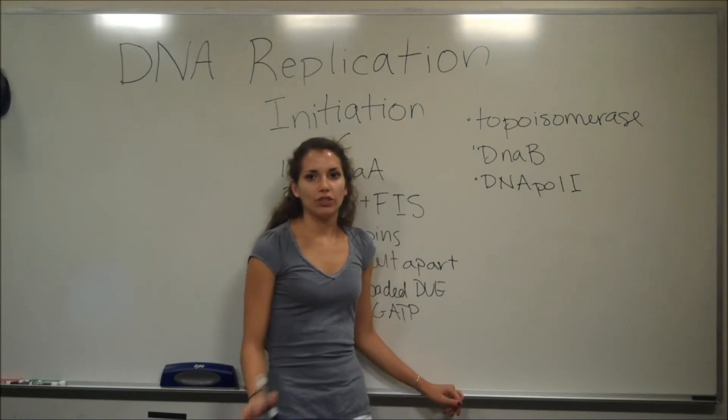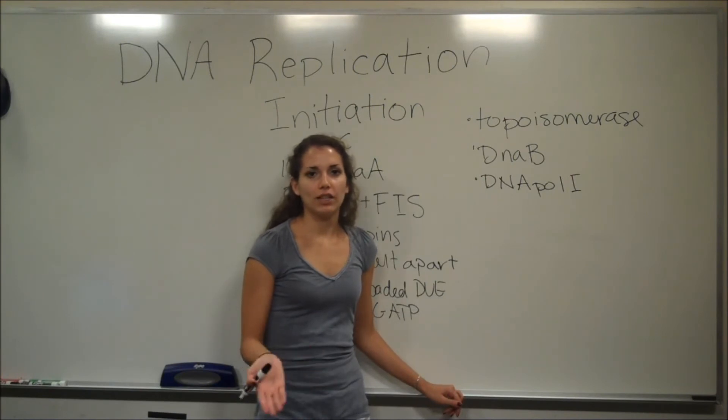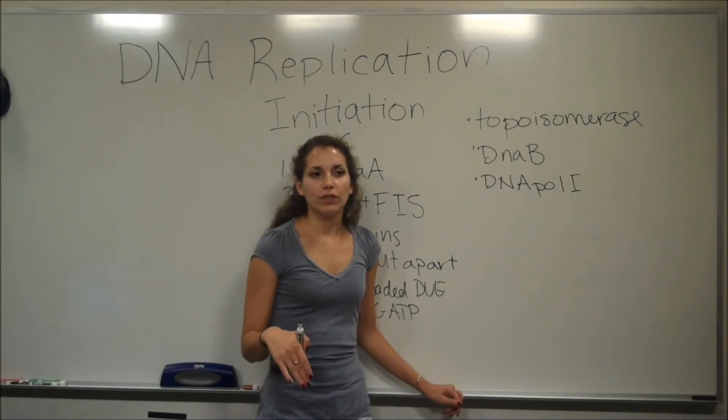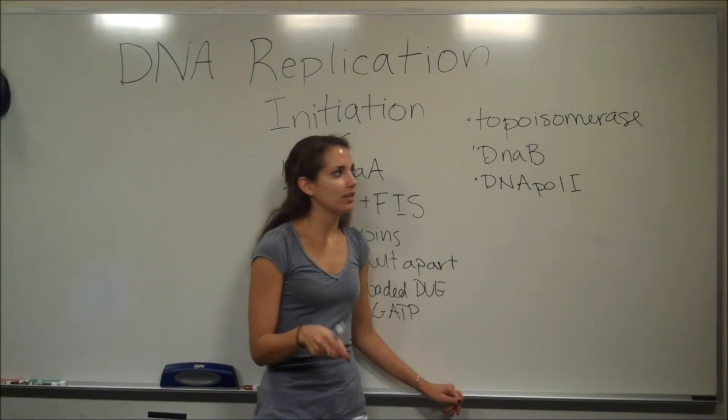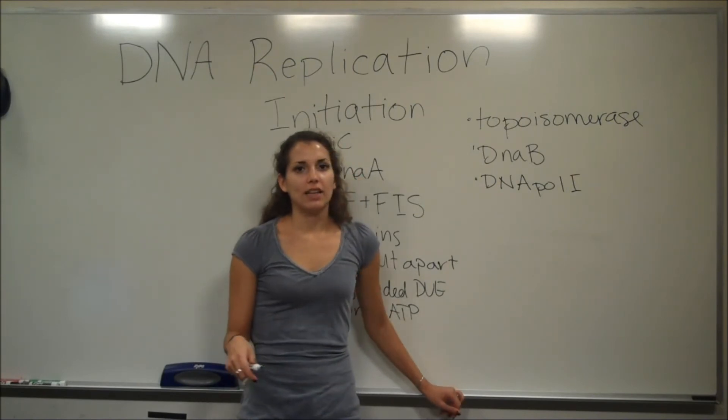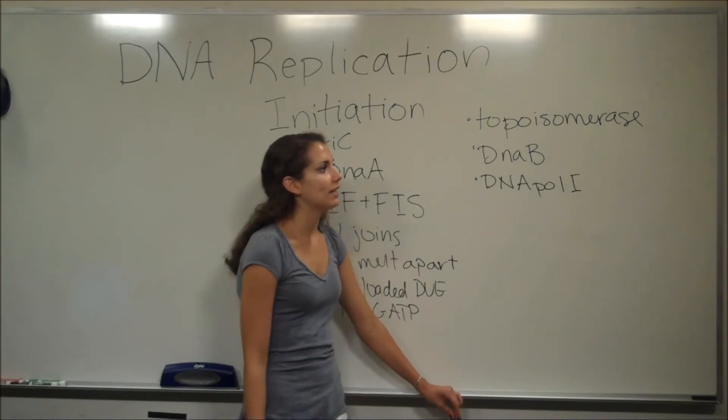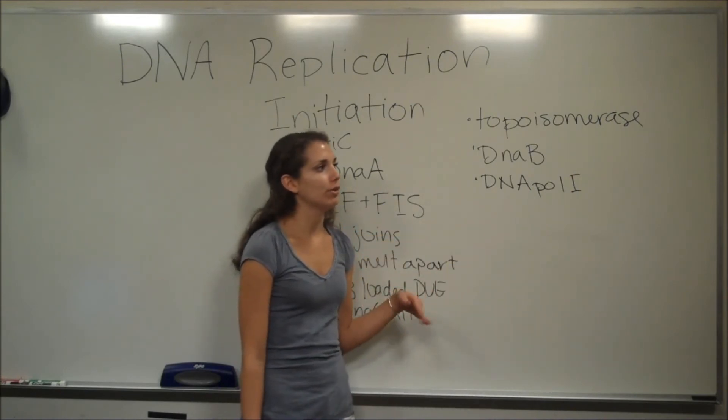DNA replication requires a short RNA primer to begin so that the free nucleotides can add to, they need an end to add to, they can't just add immediately to the parent DNA. They need a short RNA primer, and then DNA polymerase 1 goes in, removes these primers.